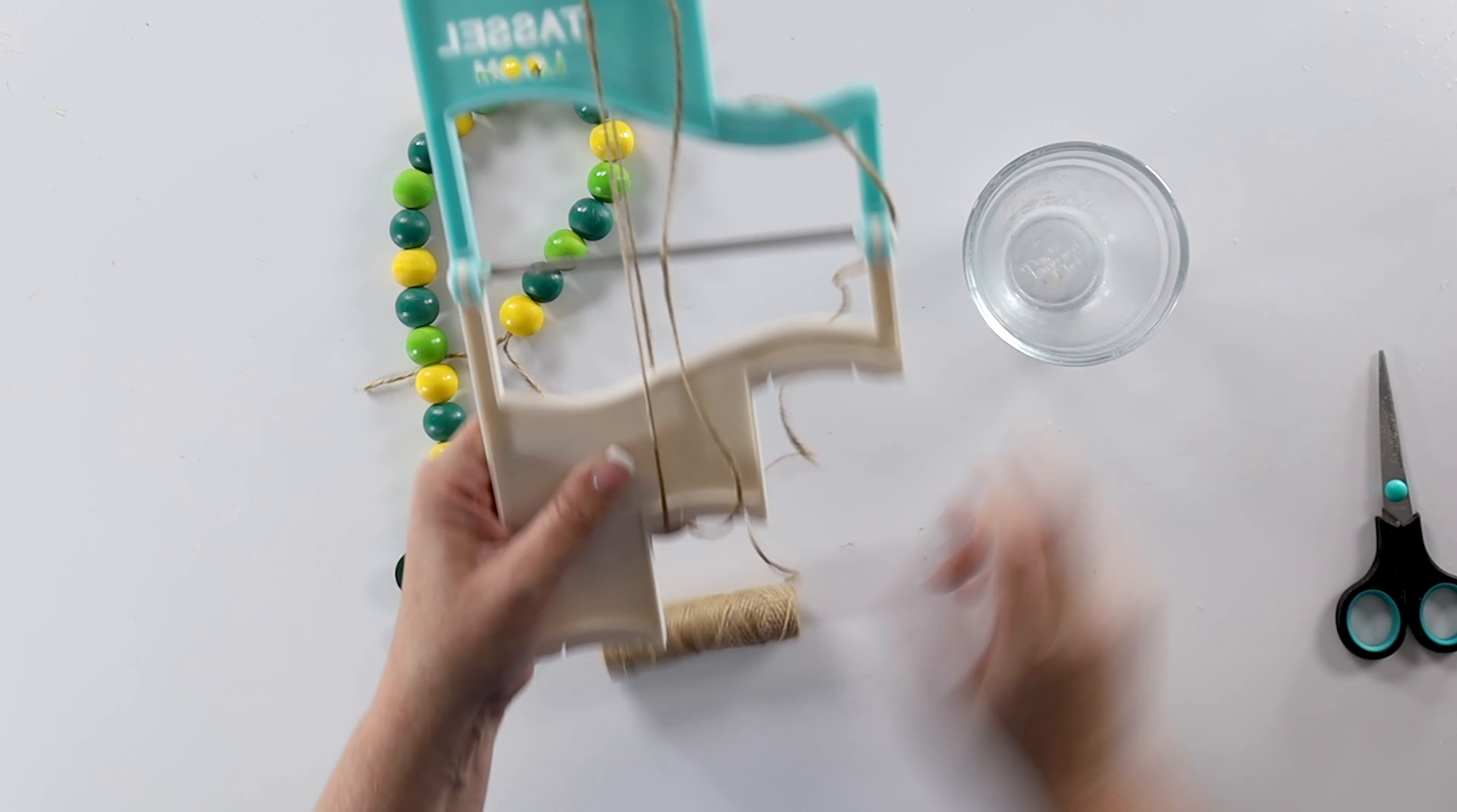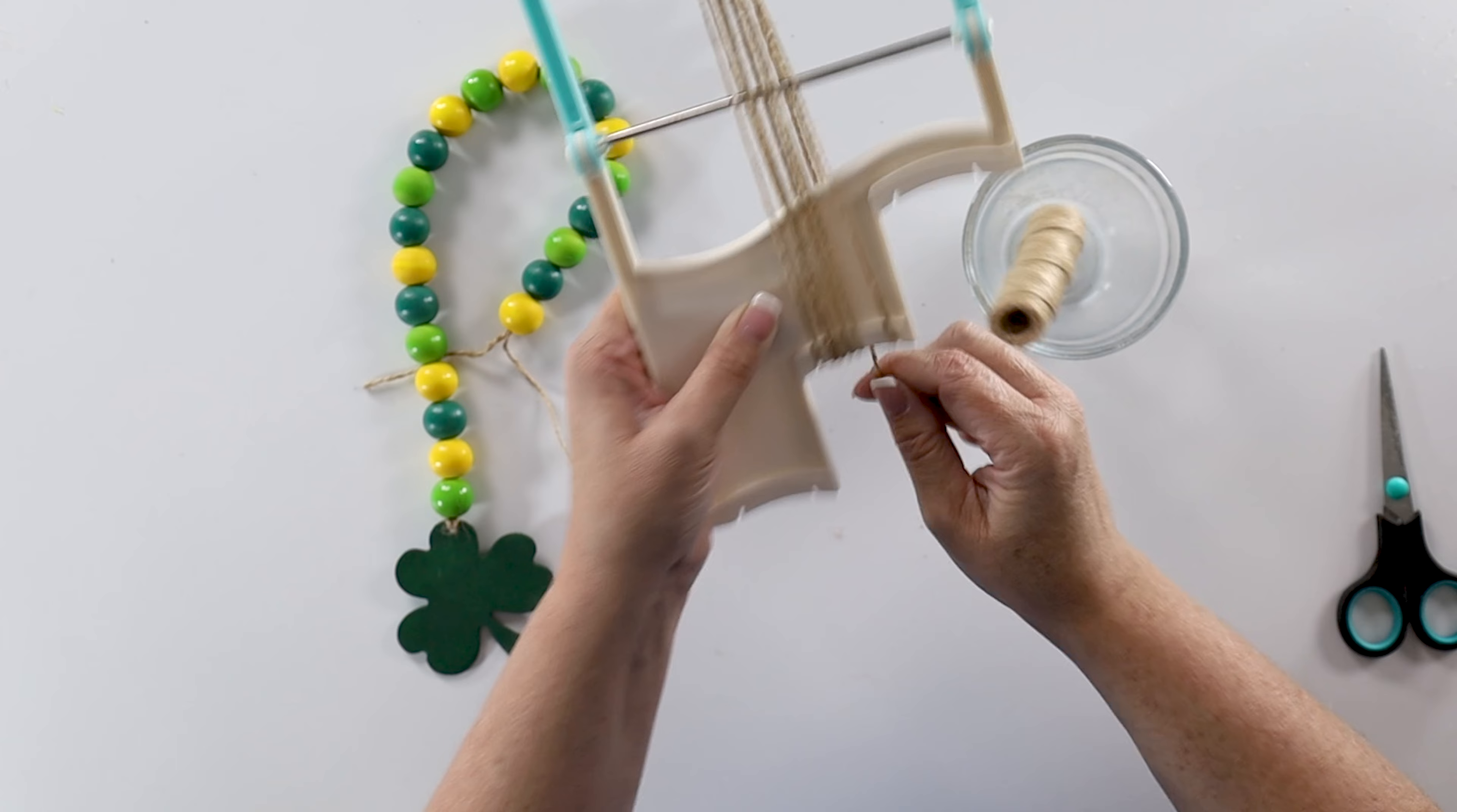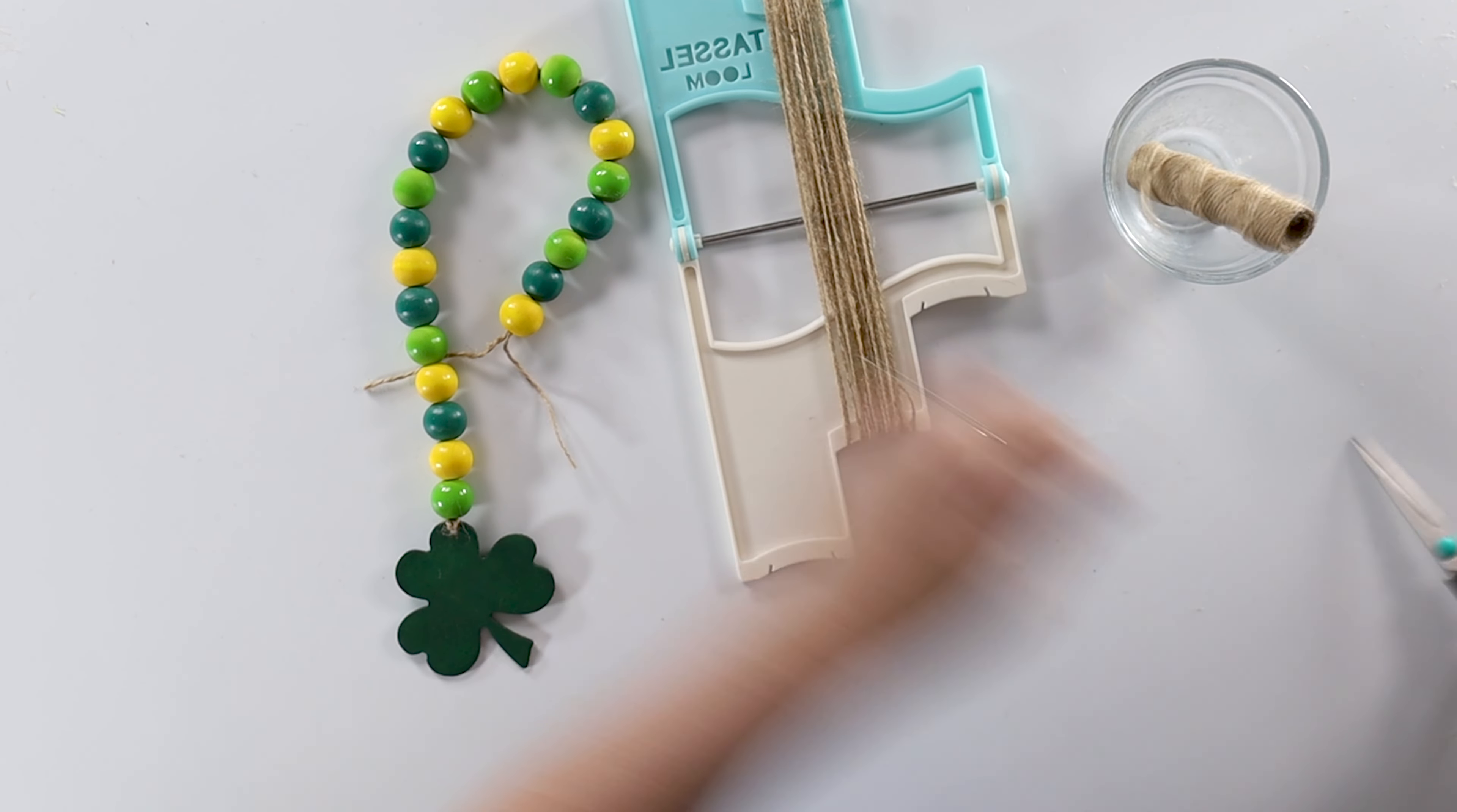And let's grab that bowl that I had my beads in. And I'm just going to wrap. Now the more twine that I add to this, the fuller my tassel will be. And since my material is already a little thick, I don't want my tassel to be too full. And then I'm going to pull that string through that last little slot and cut it off.